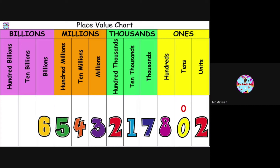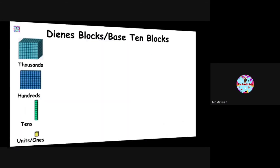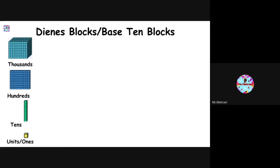Now let's try representing numbers. One method of representing numbers is using the Diene's blocks or base ten blocks. On the left we have the units or ones, which is one block; the tens, which is made up of ten unit blocks; then the hundreds, which is made up of 100 unit blocks; then the thousands, which is made up of 1,000 unit blocks.